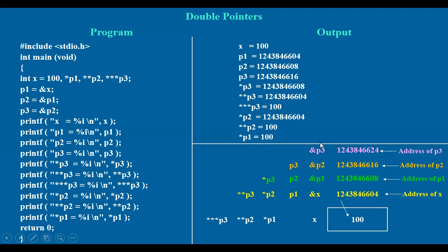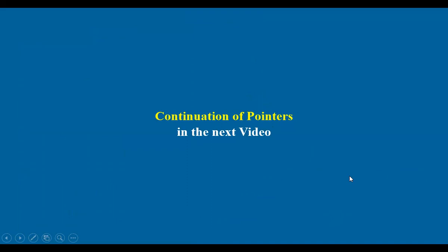I hope this picture clearly gives you an idea of what is a pointer, a double pointer, and the indirection operator — how to get the value which is stored in a particular address. So, continuation of these pointers, we will come up with another interesting feature in the pointers in the next video. Hope you have understood this topic very well. If you have any queries or doubts, please do comment, like, share, and subscribe. Thank you.